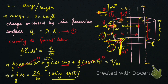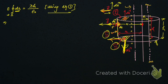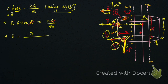Integrating dS over the curved surface of the Gaussian cylinder, where the radius is small r and height is h, gives the curved surface area: 2πrh. So from equation 1: E × 2πrh = λh/ε₀. The h cancels, and we get E = λ / (2πε₀r).